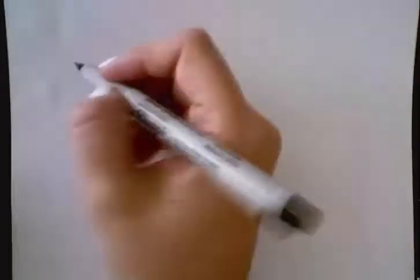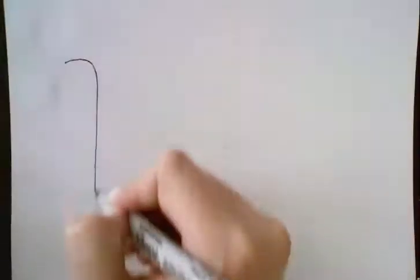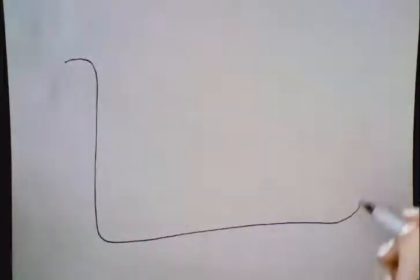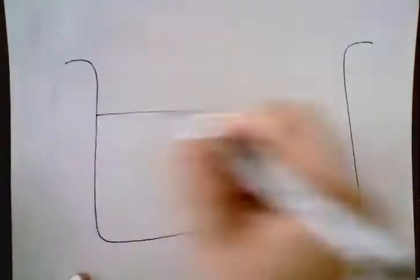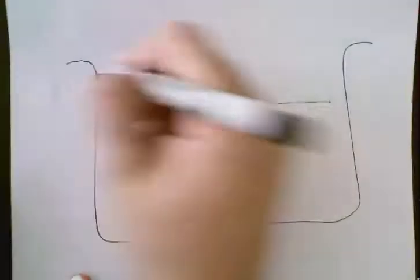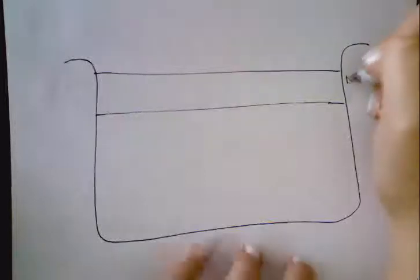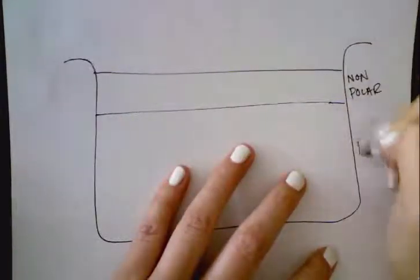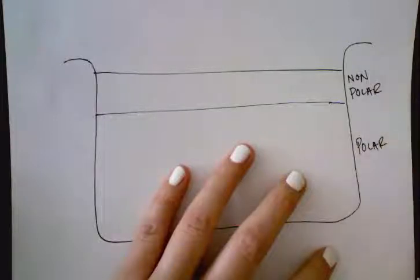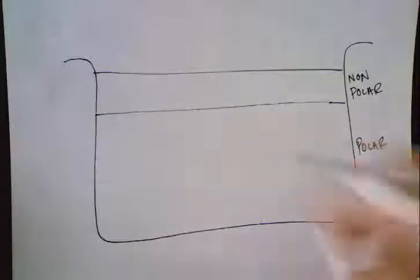So now that we know where everything goes, we need to actually draw this all out. So what I'm going to do on my sheet is draw a rough outline of a beaker. I also want to separate it into two layers. We're going to have our non-polar layer on top and our polar layer on the bottom.